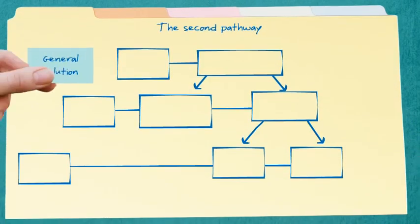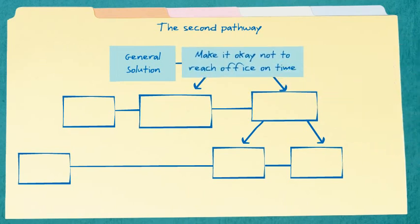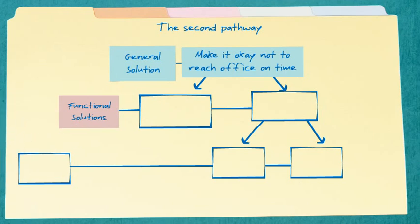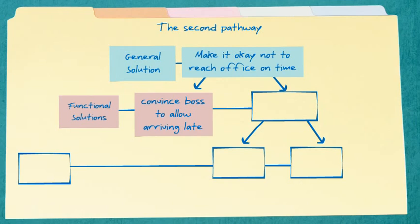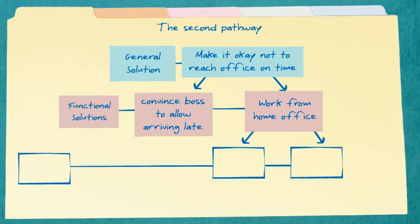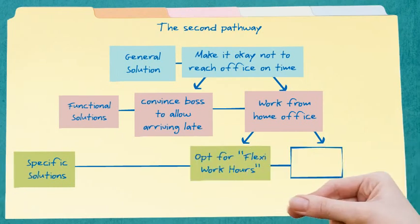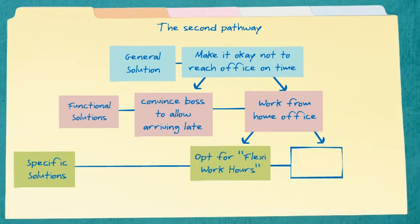Mark analyzes that none of the solutions are feasible for him. He then decides to follow the second pathway — making it okay not to reach the office on time. The functional solutions for this option are: Mark convinces his boss to allow him a grace period, he can work from his home office for the next few months, or he can opt for the flexi work hours scheme his company provides. This option will require him to set up a home office but would also provide the required flexibility. Mark decides to explore this option with his company.